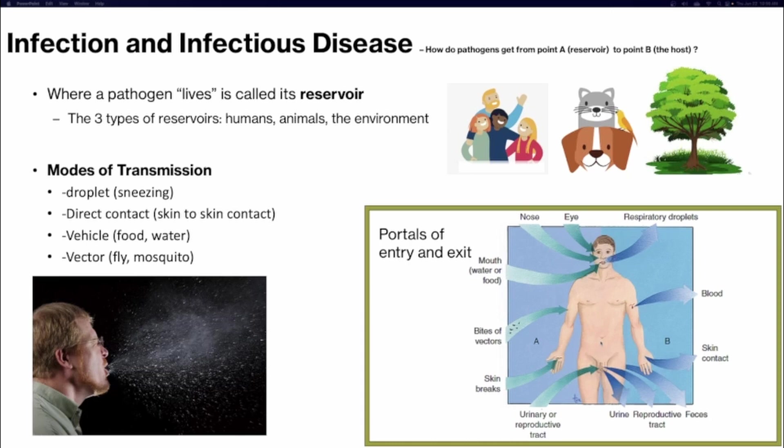How do pathogens get from point A, the reservoir, to point B, the host? A pathogen's reservoir is where it lives, and there are three types: pathogens can live in humans, in animals, and in the environment — covering almost all bases, so almost anything can be a reservoir depending on the type of pathogen.